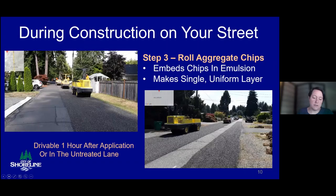After the rock chips are placed, two to three rubber tire rollers will roll them firmly into the hot asphalt emulsion to bond aggregate to the surface. Rolling will continue until a single uniform layer of chips is achieved. The street will be drivable in about an hour after rolling is finished. You can also drive in the dry untreated lane while it is open. Please drive slowly, always follow directions given by the flaggers, and do not brake suddenly on the new layer of asphalt and chip.